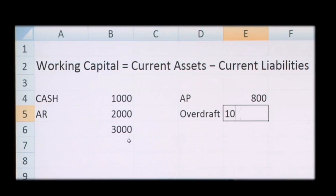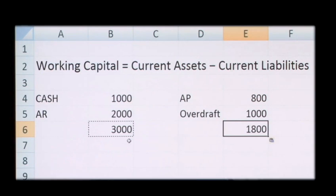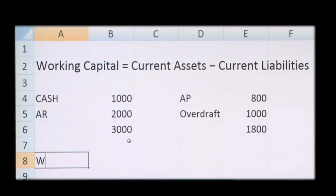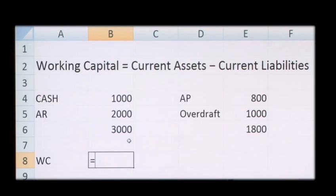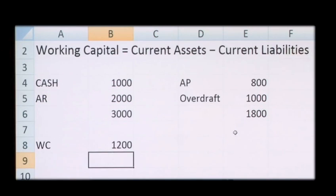So to get your working capital, simply take your three thousand and subtract current liabilities to give you working capital of twelve hundred pounds. That means you can meet your short-term liabilities.